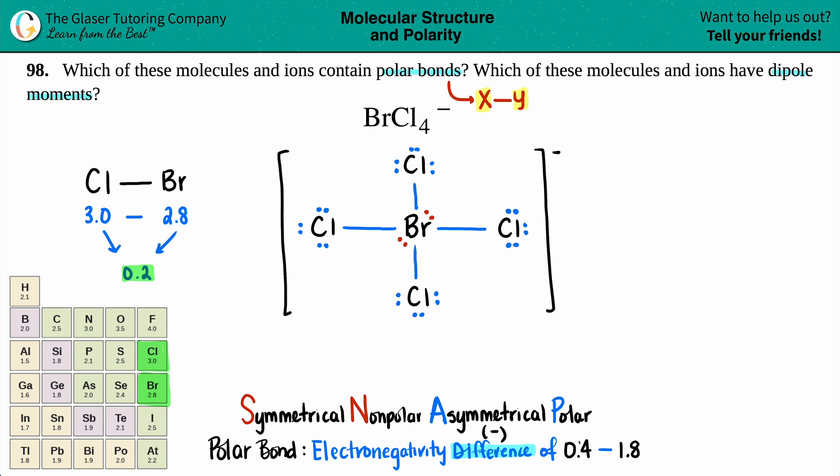Does this fall in the range of being a polar bond? Not really—it's lower than 0.4, so this is not a polar bond. If you're covalent and you are not polar, you are non-polar. These are non-polar bonds.